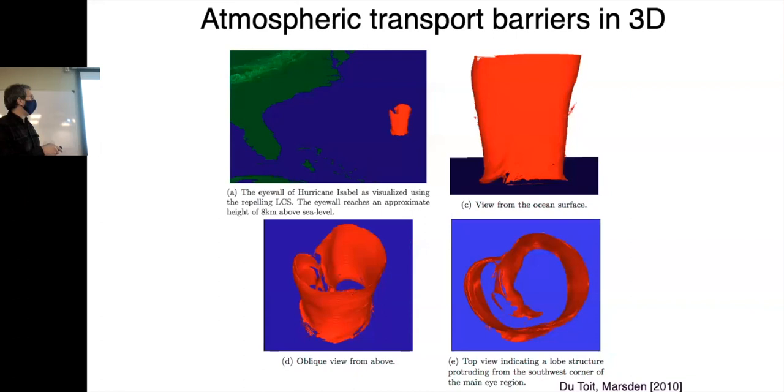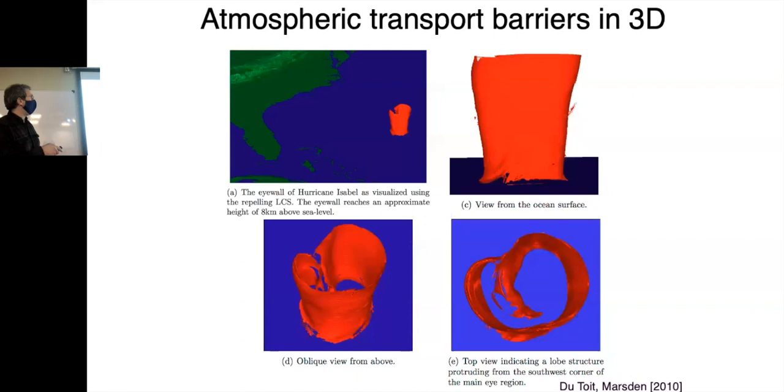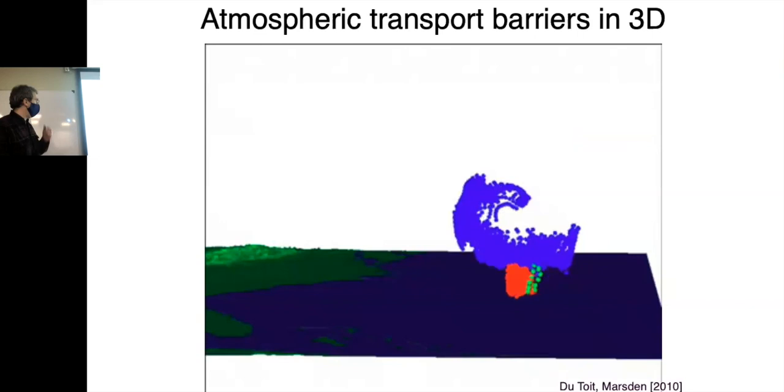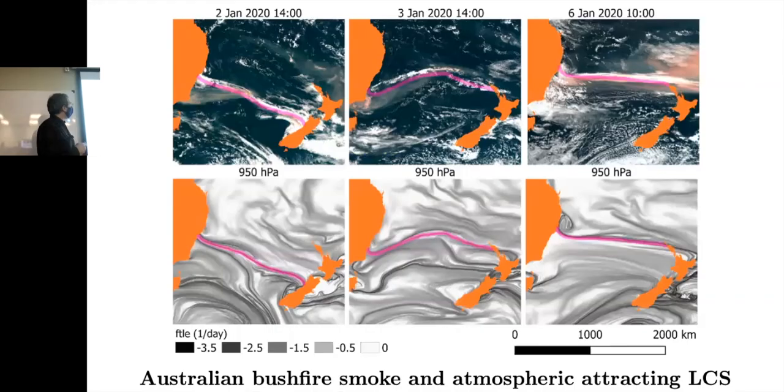You can look at these things in 3D. So here is Hurricane Isabel. This is a little movie. This was made by Philippe Dutrois, who's at Numerica Corporation. And this is just looking at particles that were in different parts of the hurricane and what they do.